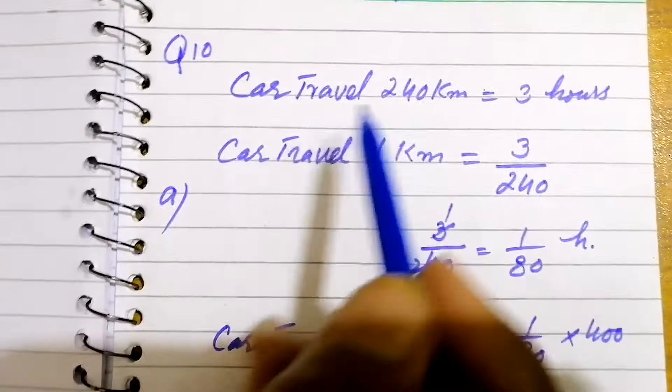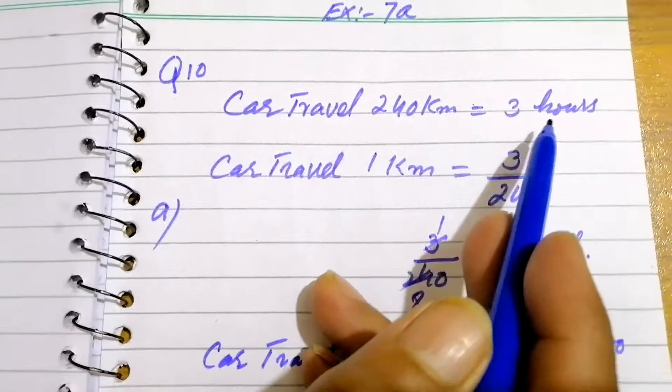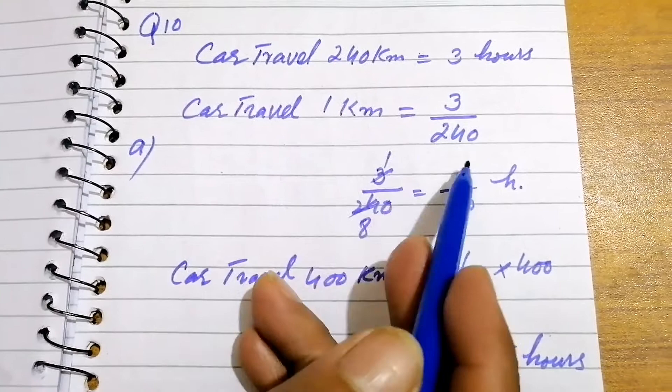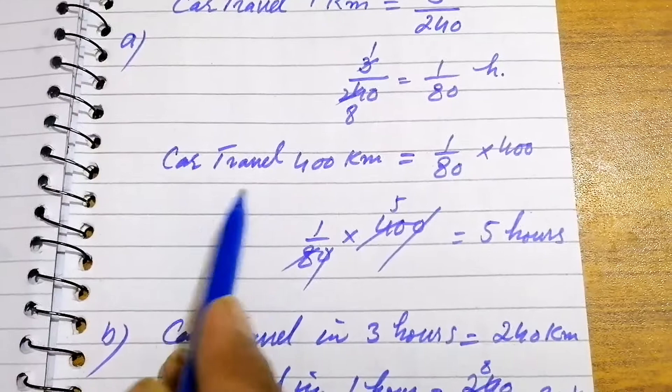Car travels 1 kilometer in 3 over 240. Further by canceling, 3 over 24, 1 over 80 hours it will take. Car travels 400 kilometers: 1 over 80 multiply 400. 0 will be cancelled with 0 and 8 fives is 40, it will take 5 hours.